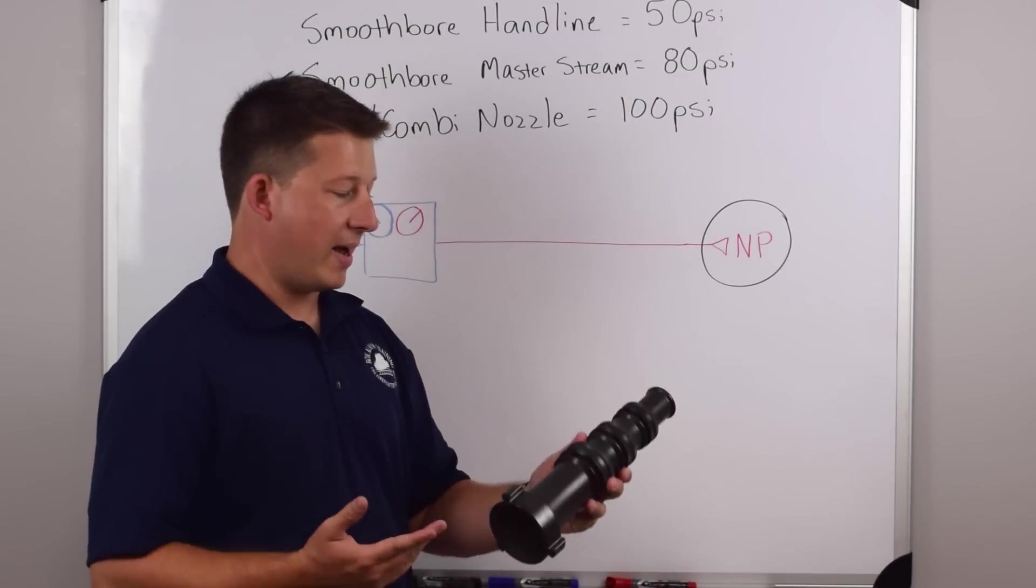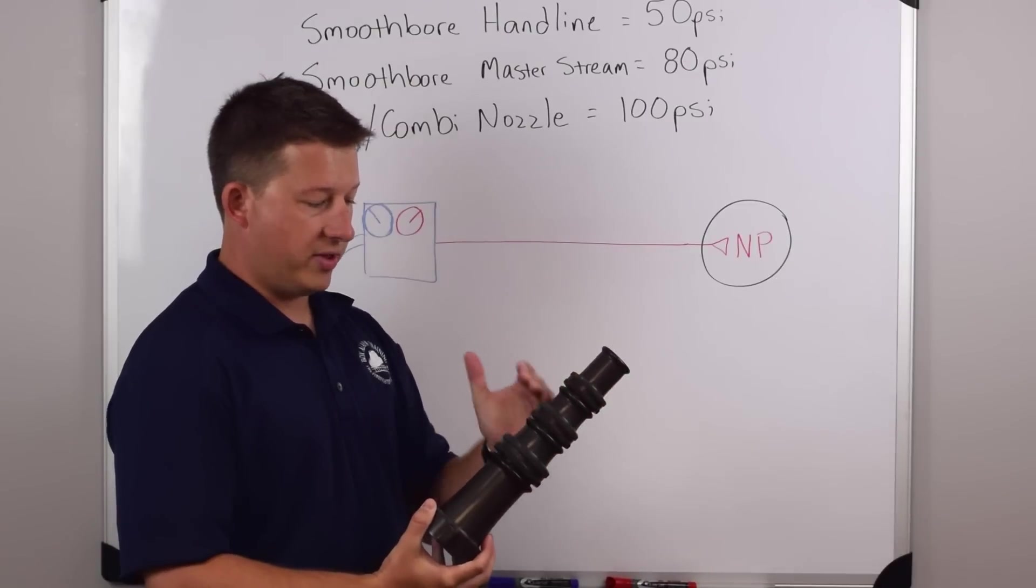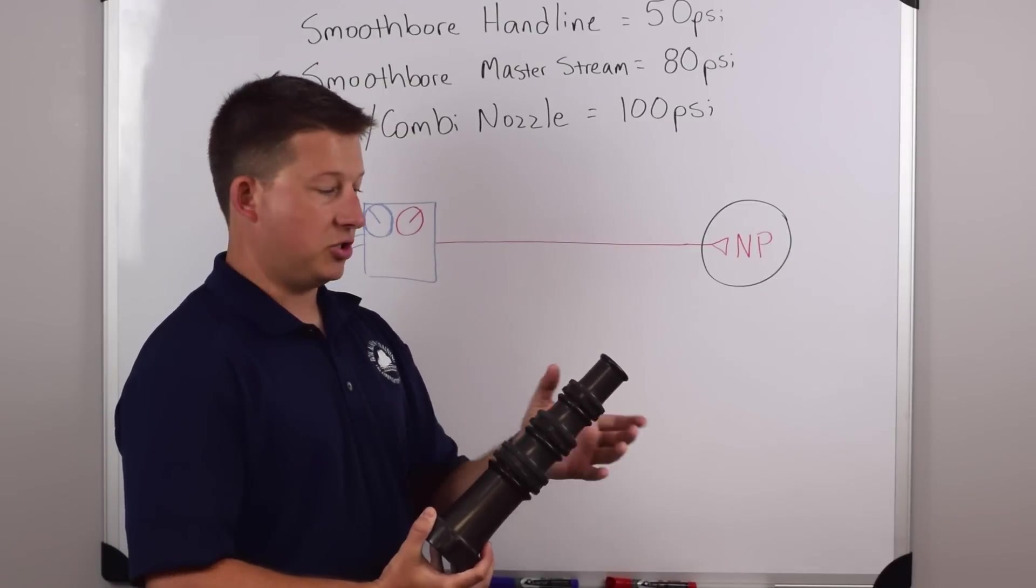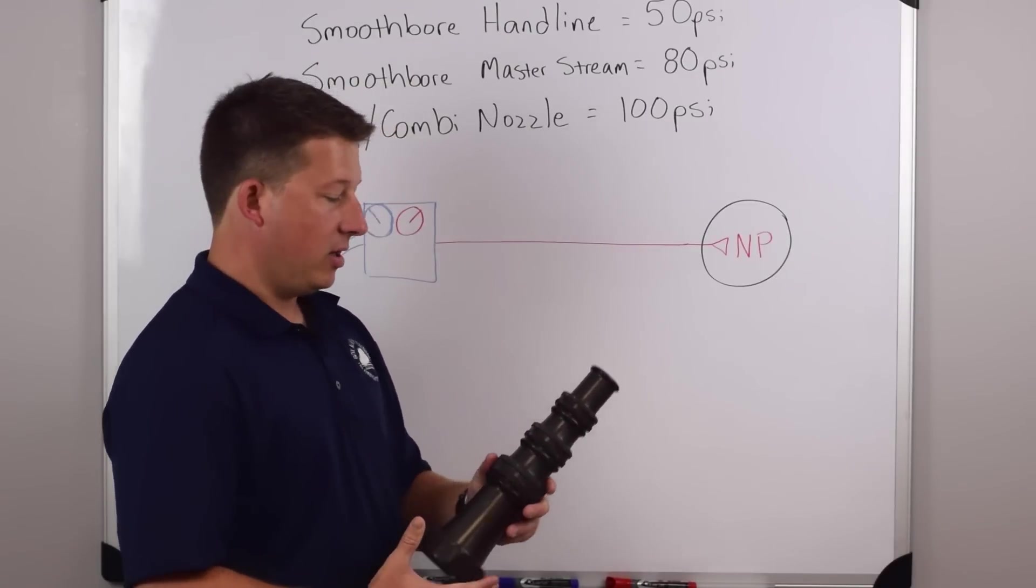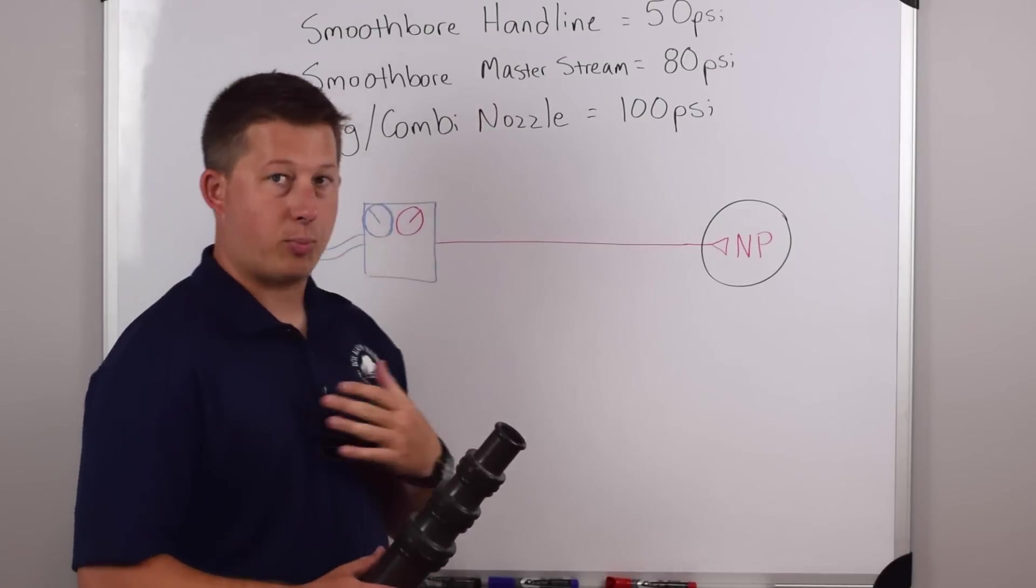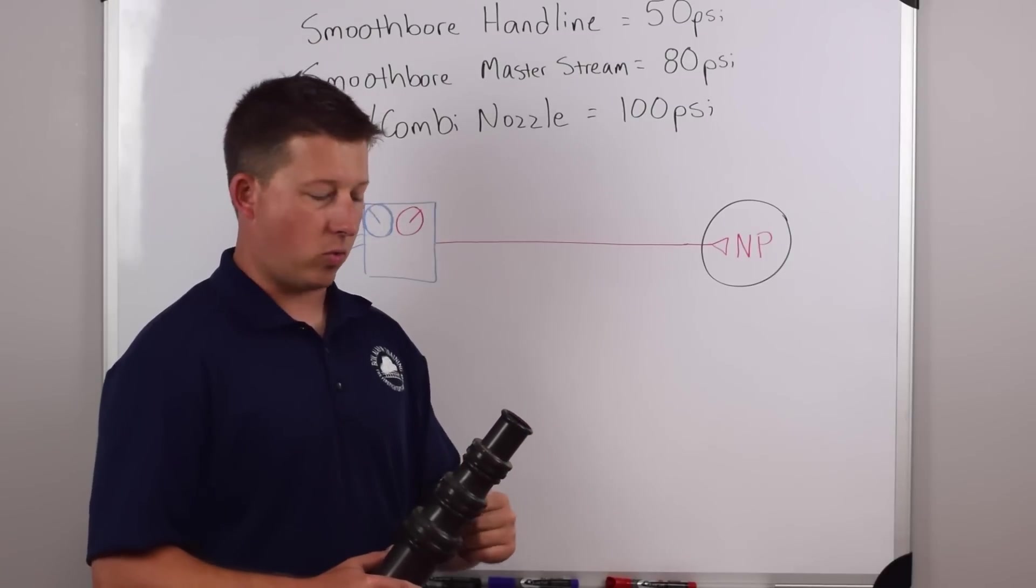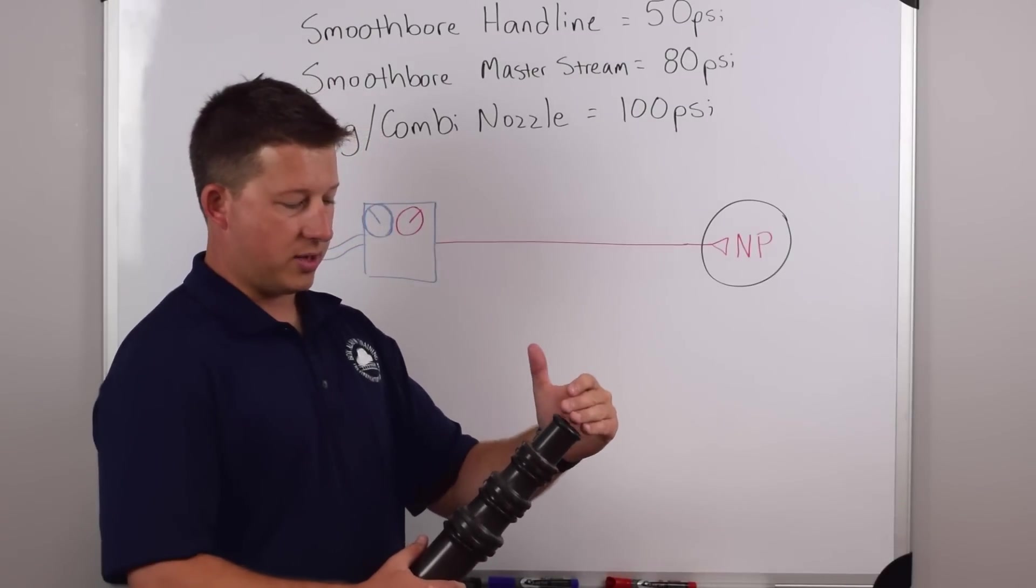Next up is the smoothbore master stream. A lot of times you're going to see this as stacked tips. So you can remove the tips off the master stream to change the size of the opening. Smoothbore master streams for our purposes are going to operate at 80 PSI. That's a standard number, kind of a general rule of thumb as to what the pressure of the nozzle should operate at.